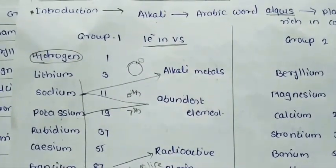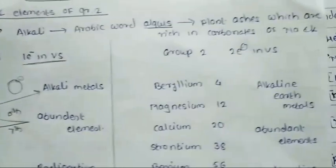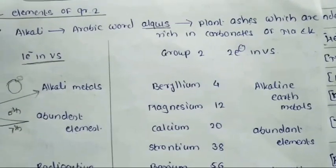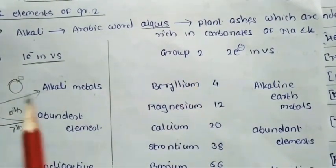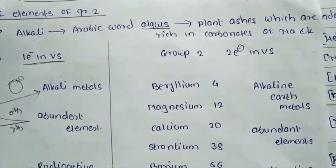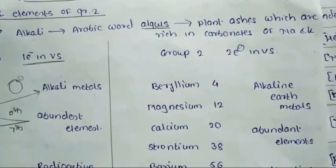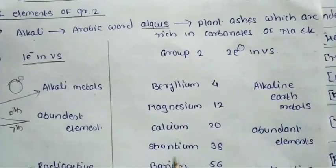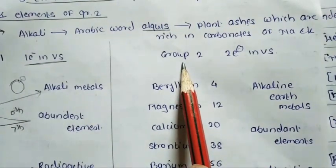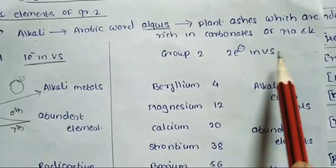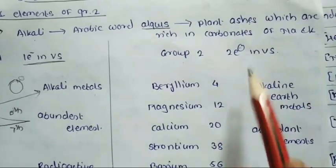Now we see group number 2. Similarly to group number 1, atoms of group number 2 have 2 electrons in their valence shell.